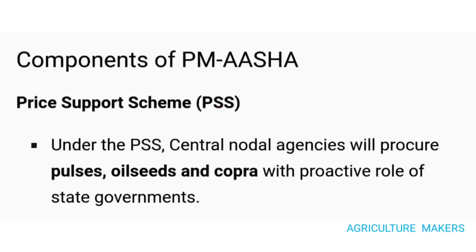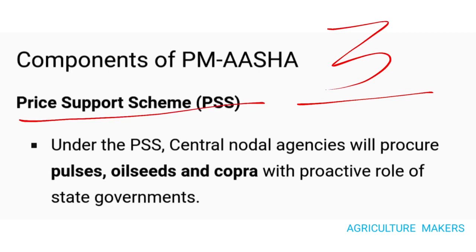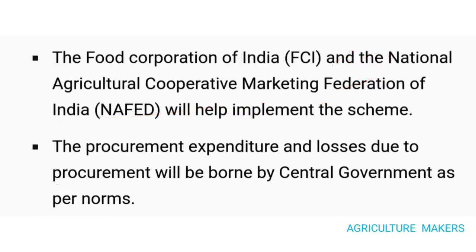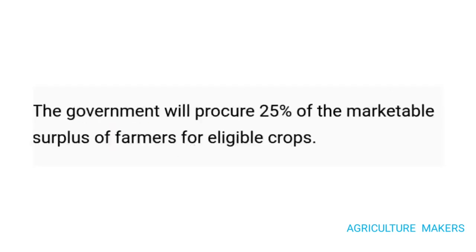There are three components in PM ASHA. Firstly, it is the Price Support Scheme (PSS). Under PSS, the central nodal agency will procure pulses, oil seeds, and copra with an active role of state governments. The FCI and NAFED will help in implementing the scheme. The procurement expenditure and losses due to procurement will be borne by the central government as per the norms, and the government will procure 25% of the marketable surplus of the farmers for eligible crops.